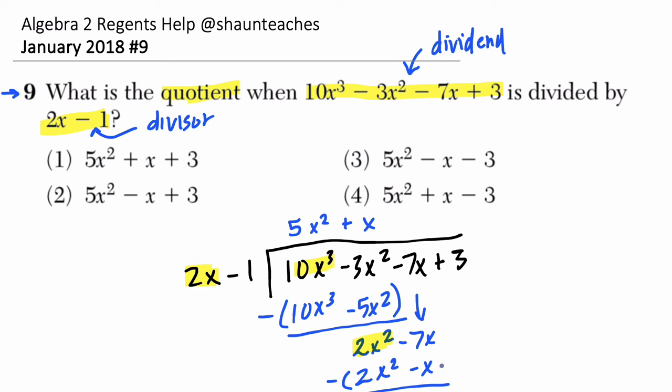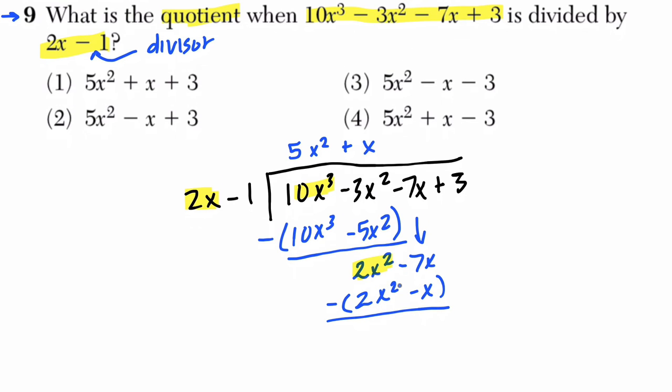We subtract to see what the remainder is, if there is any. The first two terms should always cancel to 0. Then we get -7x minus -x, so -7x plus x is -6x. And bring down a 3.